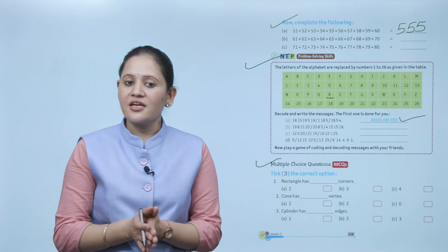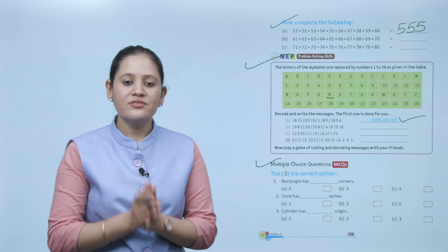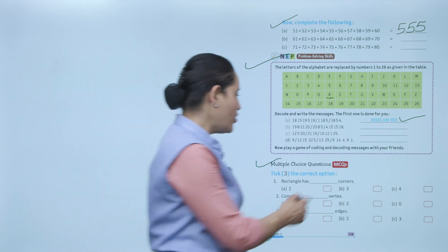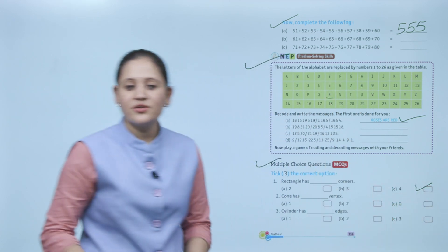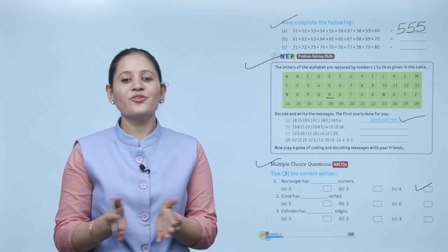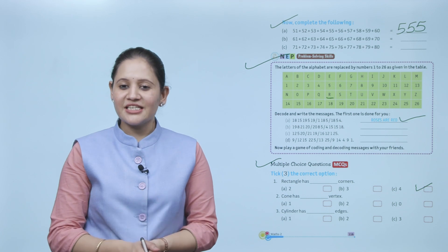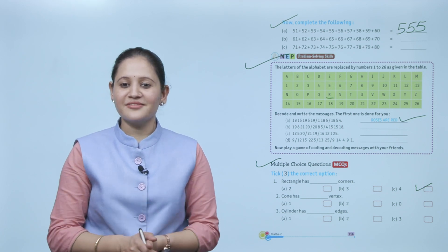Multiple choice question: 'A rectangle has four corners' — so C is the correct option. So here we end the chapter. I hope you understood the chapter well. Now go and practice it.